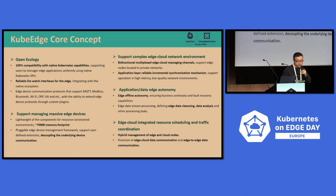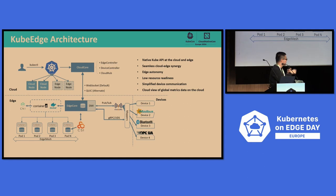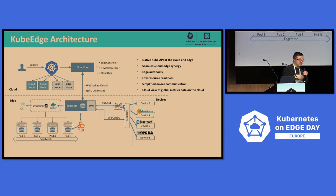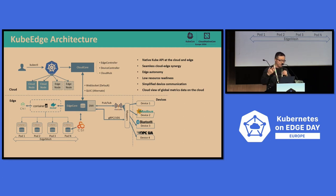The next feature is application and data edge autonomy. I want to introduce what edge autonomy means in the Kubernetes architecture. In native Kubernetes, when a pod and other metadata are sent to Kubernetes, Kubernetes saves the metadata in memory. When the edge node goes offline and then restarts, the kubelet can't recover the application. But in KubeEdge, we store the metadata in a database at the edge. So when the edge node goes offline and restarts, it can load the metadata from the SQLite database and recover the application, ensuring the application runs stably on the edge node.